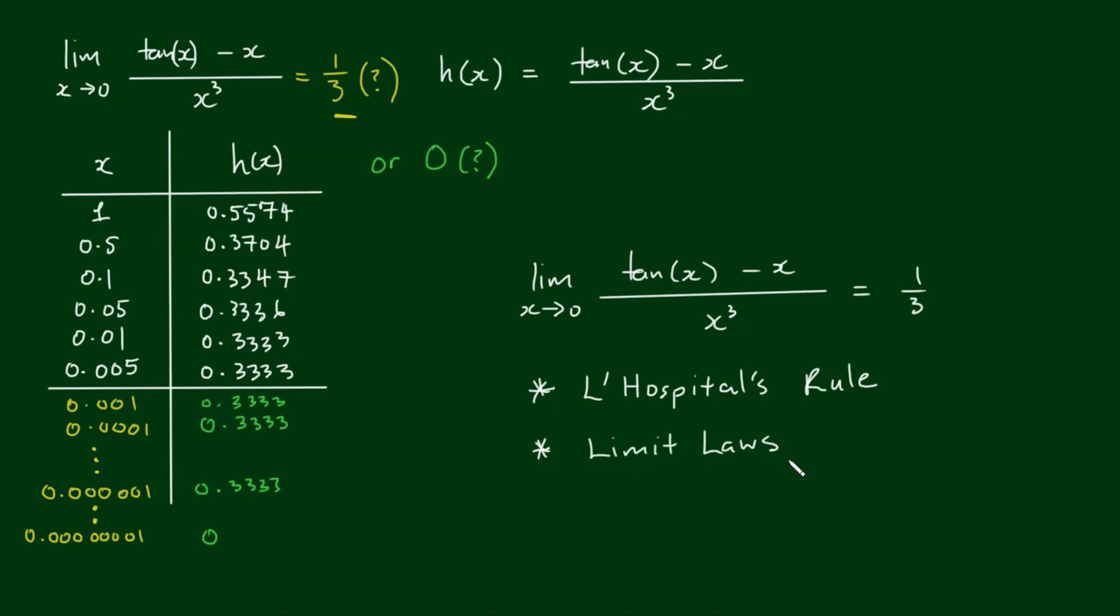So the moral of this video is we need to be careful when evaluating limits with calculators because they can give false values when we get close to the value of x that we're trying to find the limit at. But for now, let's box this result. The limit of tan of x minus x over x cubed is equal to 1 third, and we will revisit this in another video.